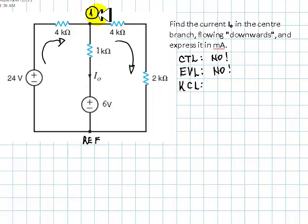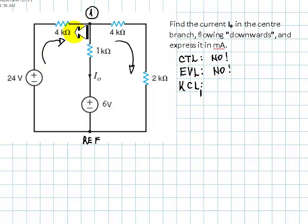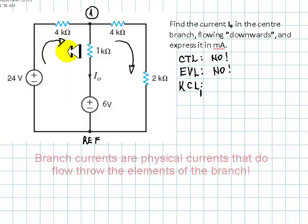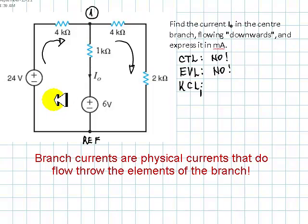So KCL: one equation for every node that is not the reference. That leaves us with only one equation — KCL for node one. Currents going into that node: this one. That equals the currents leaving the node: I0 and the current in the other branch. Remember, these are branch currents — actual currents in those wires, not the imaginary loop currents from high school. These are physical currents really flowing in those wires.